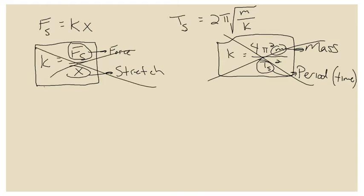You think about what they're asking you for, you think about all the equations you know that you could solve for that variable, and then based on the equipment given, you figure out what you can actually measure — and that will allow you to choose which equation will yield the simplest experiment.